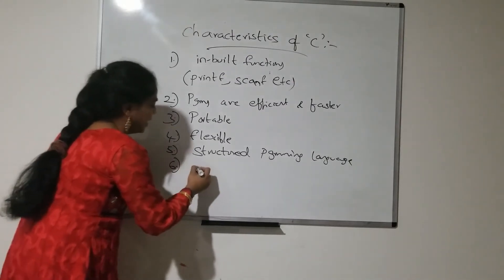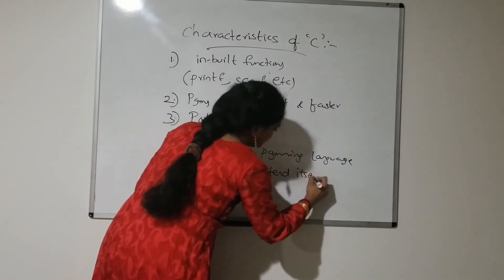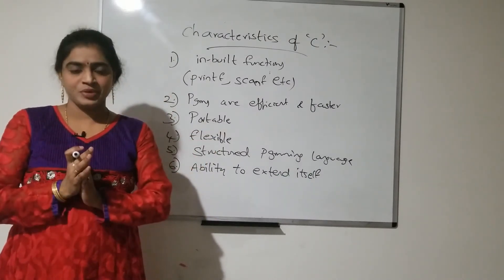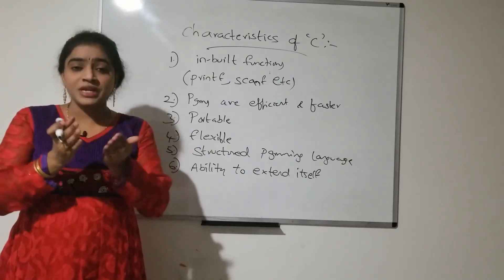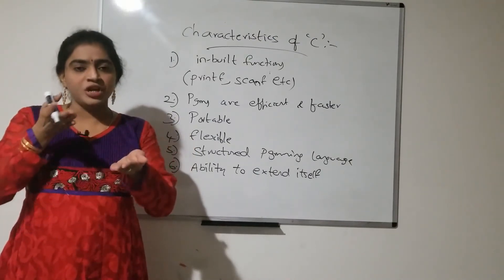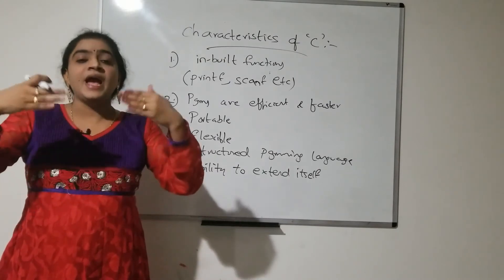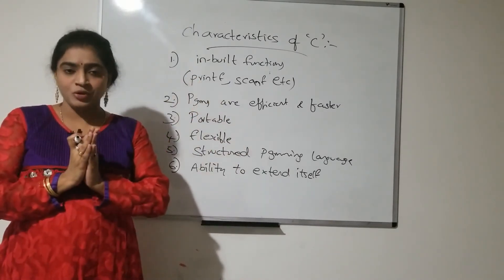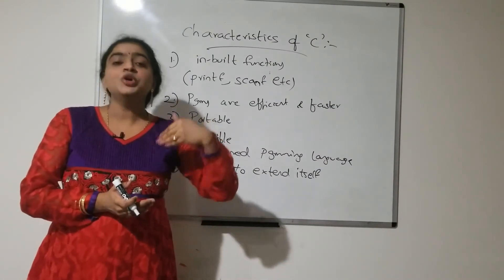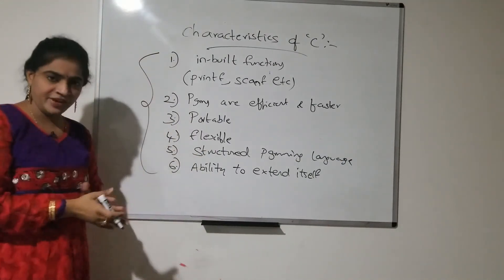The sixth characteristic is that C has an ability to extend itself. According to the user's requirement, a user can add his own functions — called user defined functions — to the main C program. That nature is called extensibility. C has an ability to extend itself according to user requirements. These are the main characteristics of C language.